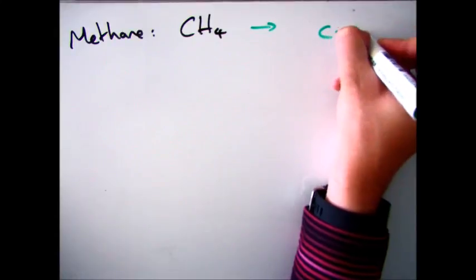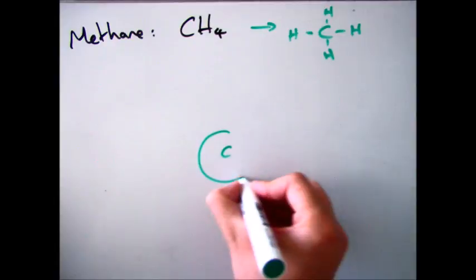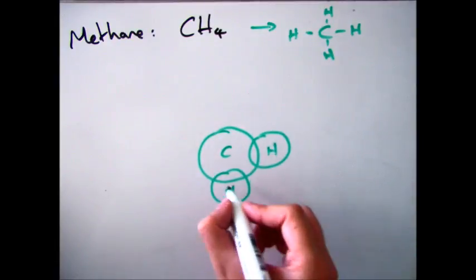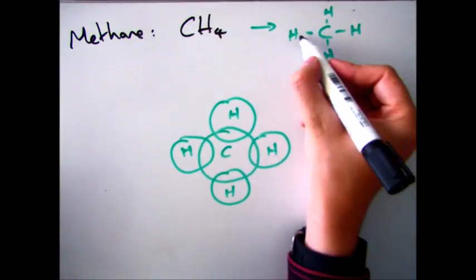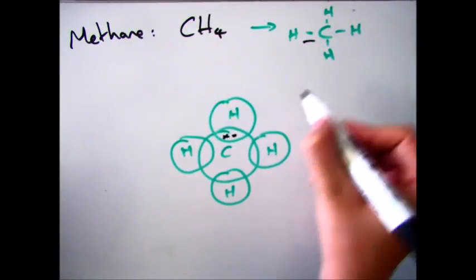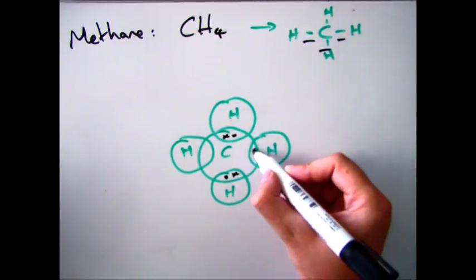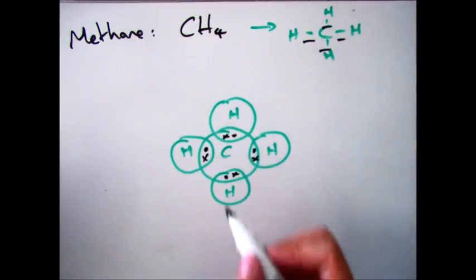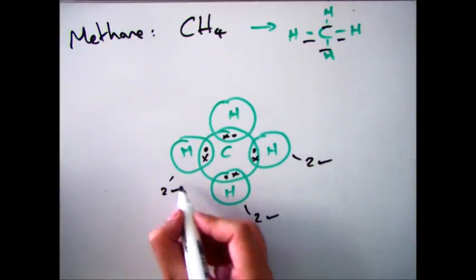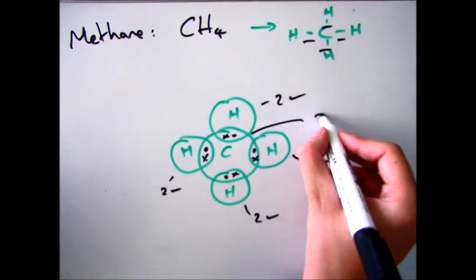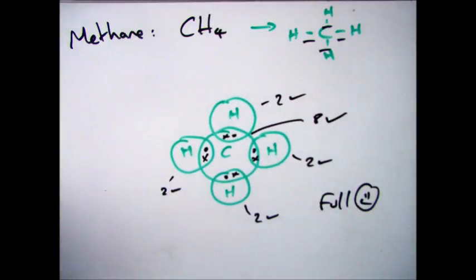Let's go back to methane now. Methane is CH4 — one carbon in the middle with four hydrogens around the outside. Put your carbon in the centre and surround it with your four hydrogens. Then for every one of those lines, put in your dot and cross — one for every hydrogen-carbon bond. Count up: two electrons for each hydrogen — so all the hydrogens are full. And the carbon has eight, which is a full outer shell.